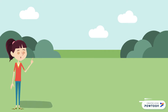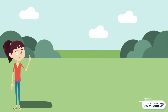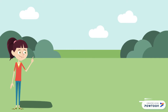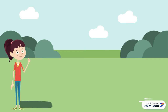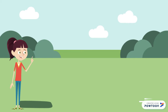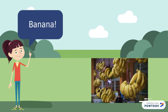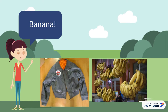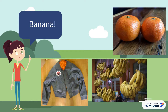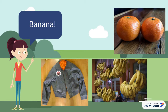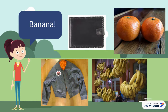Seungji was also able to follow simple instructions most of the time. When asked to point to certain objects such as a banana, jacket, basket of oranges, wallet, and bottles from the picture, she was able to do it with little prompting and assistance.